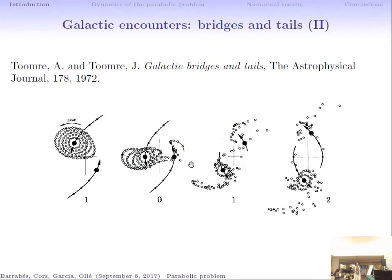Our motivation started when we discovered the work of Toomre and Toomre back in 1972. These bridges and tails were already observed, and they considered a very simple model: the parabolic restricted three-body problem, in which two point masses are in parabolic orbits, with a set of non-interacting particles around one of the bodies in circular orbits.